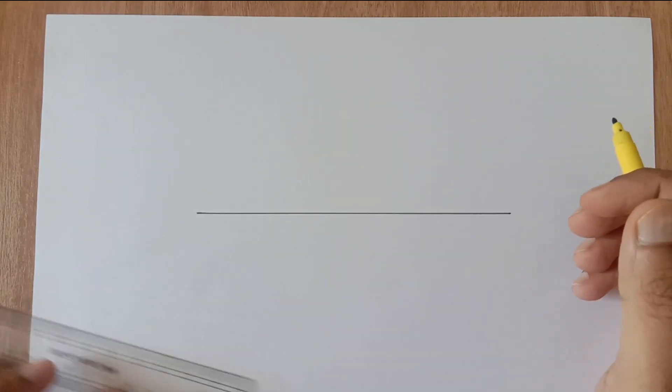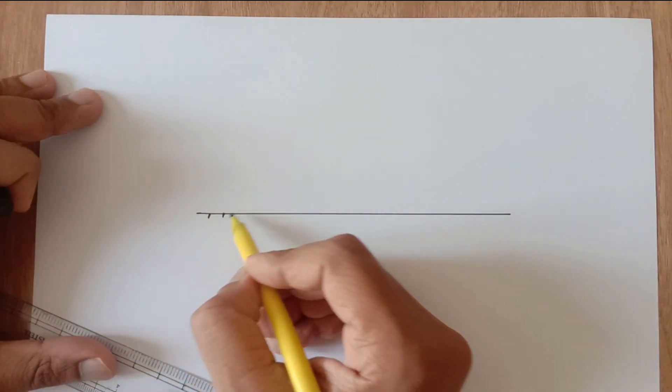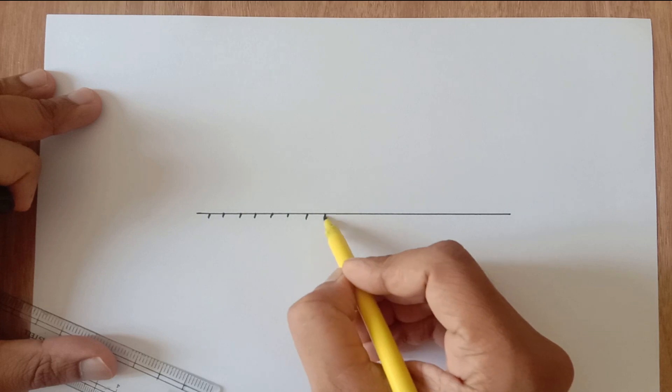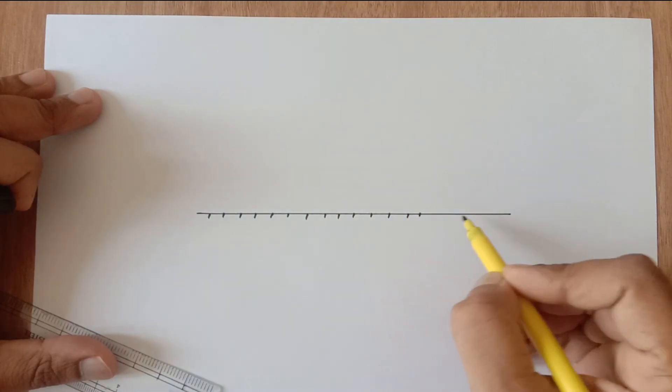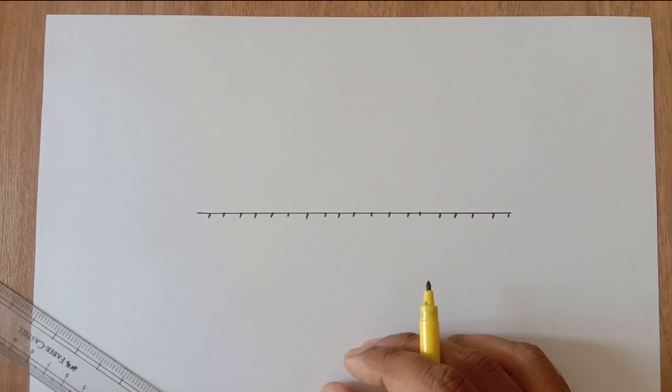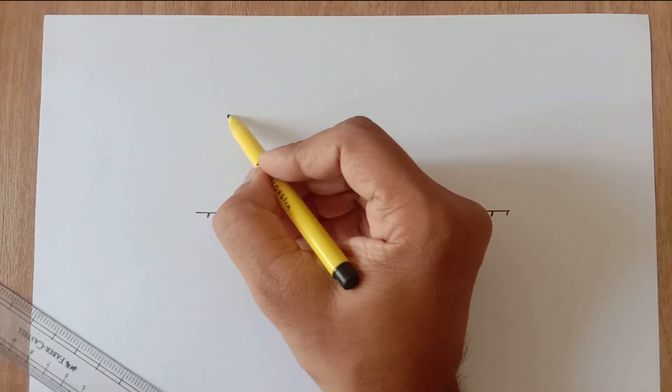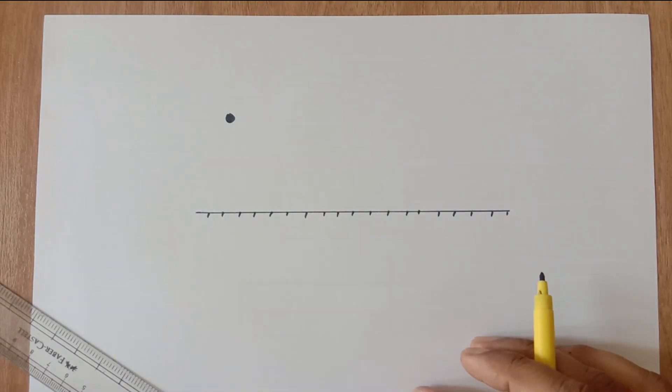So here I have drawn a straight line and this is our non-reflecting side of the mirror. This dot is our object. It can be a small bulb. I am going to name it as O.